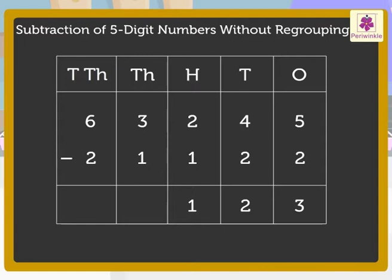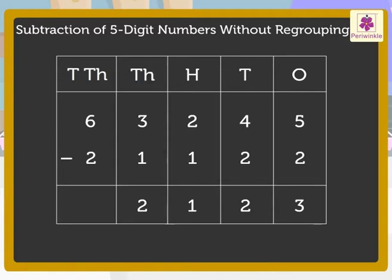Then, subtract the numbers in the thousands column. That is, 1 from 3. We get 2, which we write in the thousands column. Finally, subtract the numbers in the ten-thousands column. That is, 2 from 6. We get 4, which we write in the ten-thousands column.